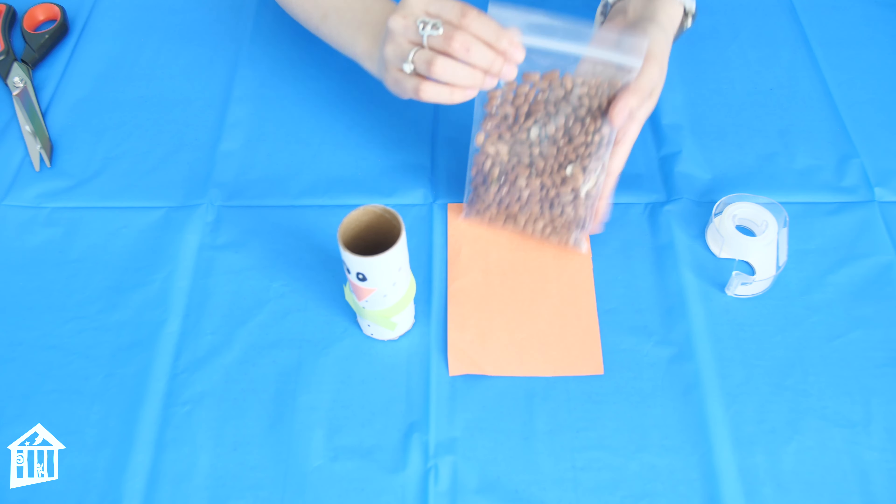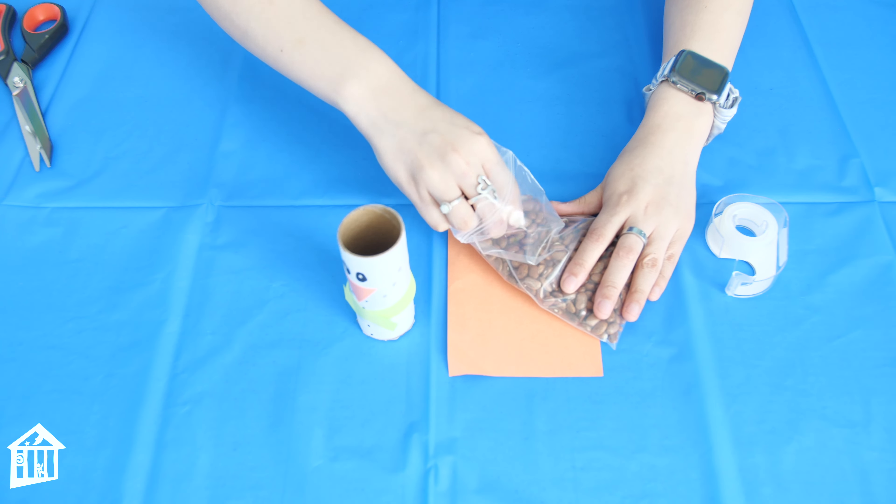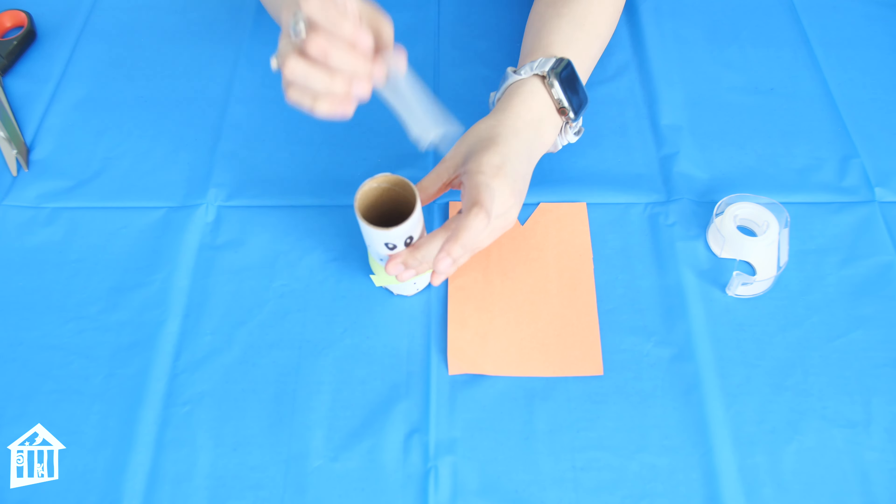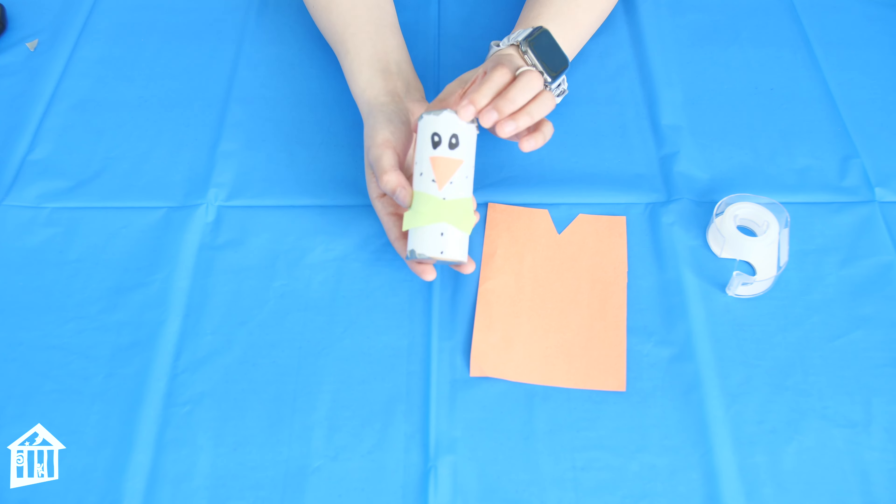That way you can grab your beans and fill up your toilet paper roll. Or in my case I'm just gonna add a little bit of beans. Next you're gonna grab your piece of duct tape again, cut another square piece, and add it to the top of your toilet paper roll. You're gonna do the same thing you did to the bottom.